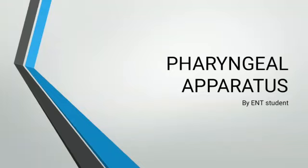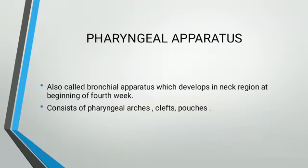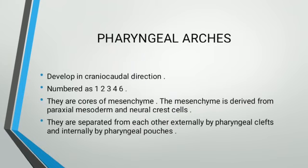Pharyngeal apparatus by ENT student. The pharyngeal apparatus, also called branchial apparatus, develops in the neck region at the beginning of the fourth week. It consists of pharyngeal arches, clefts, and pouches. They develop in a craniocaudal direction and are numbered 1, 2, 3, 4, and 6. They are cores of mesenchyme derived from paraxial mesoderm and neural crest cells, separated externally by pharyngeal clefts and internally by pharyngeal pouches.